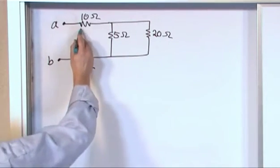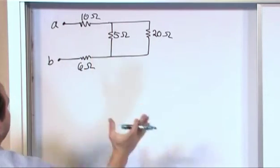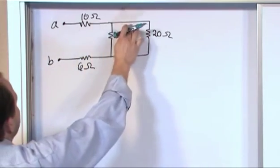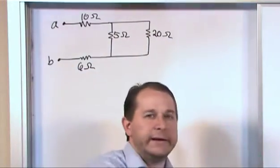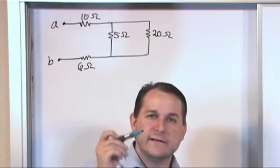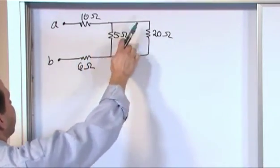But you can see right away you can't add these. Sometimes students will try to add 10 and 5 because they think they're in series. They are not in series because there's branching going on here. The only time you can have things in series is if it's just end to end, nothing else going on. This is clearly not end to end because there's a branch here.